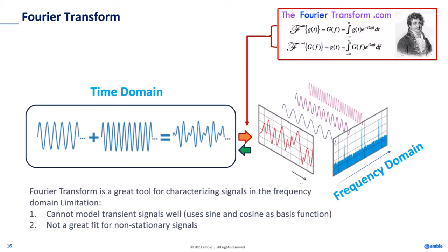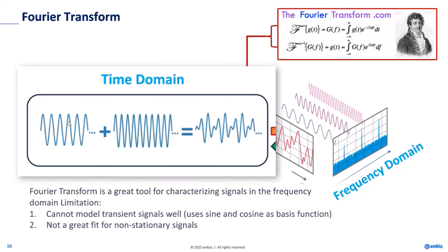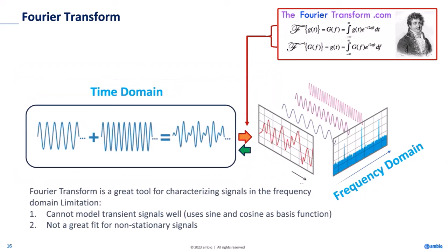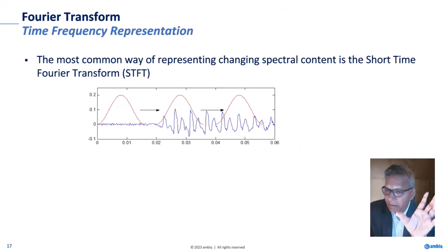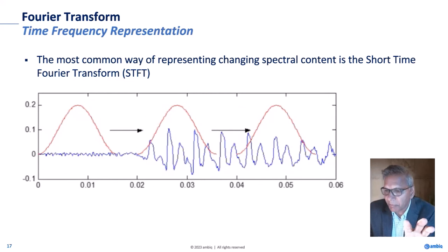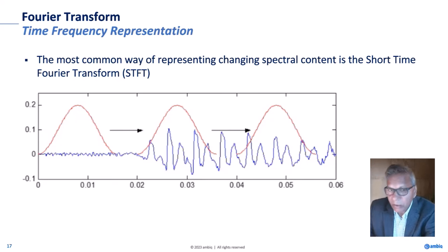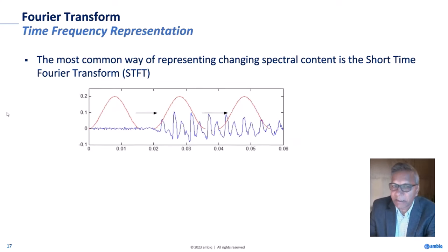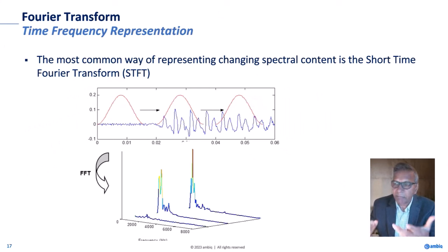However, there are some limitations of the Fourier transform. It cannot model transient signals — the signal has to be periodic, so it's not a great fit for non-stationary signals. Fourier transform uses sine and cosine as its basis functions, and by default assumes all signals consist of these. It cannot give you precise simultaneous time and frequency information — it gives you one or the other, but not both. To get time information, we apply a window function, but this window size is fixed and cannot be changed.